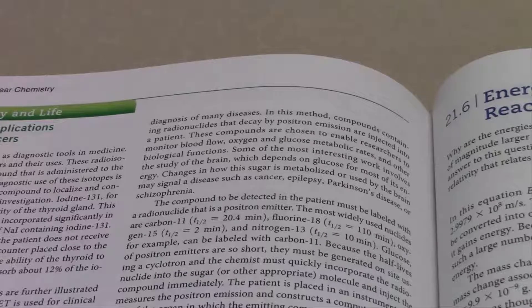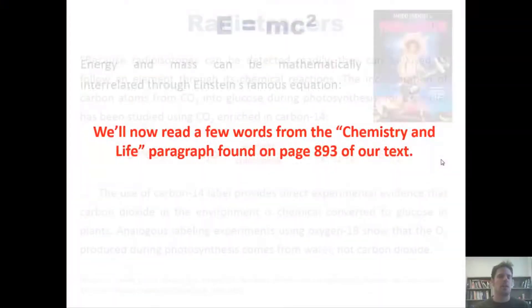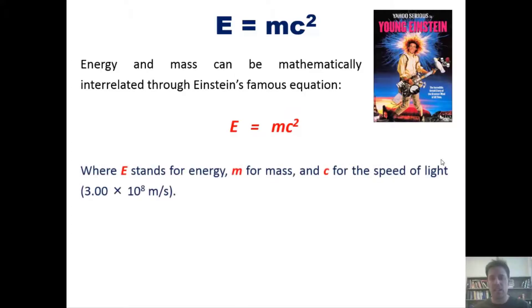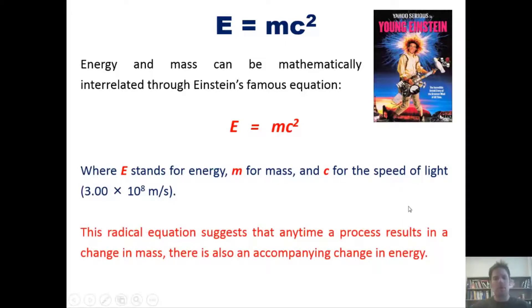Now, on to another subject: E equals mc squared, which is, of course, a famous equation devised by Einstein. Here's a picture of him when he was younger. Now, energy and mass can be mathematically interrelated using this famous equation, where E stands for energy, m for mass, and c for the speed of light, which happens to be 3 times 10 to the 8th meters per second. This radical equation suggests that any time a process results in a change in mass, there's also an accompanying change in energy. In essence, theoretically, this shows that mass and energy can, in theory at least, be interconverted, as we see displayed on the synthesizer machines shown on Star Trek: The Next Generation, if you're old enough to have enjoyed that show like me.